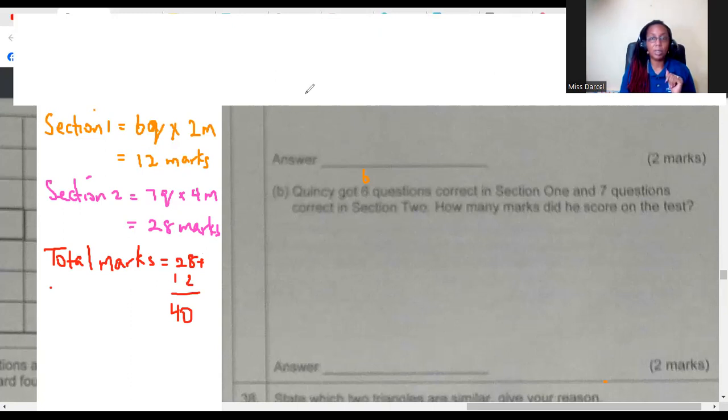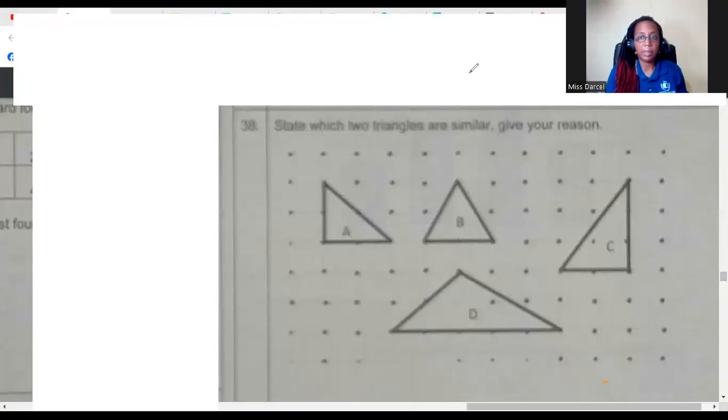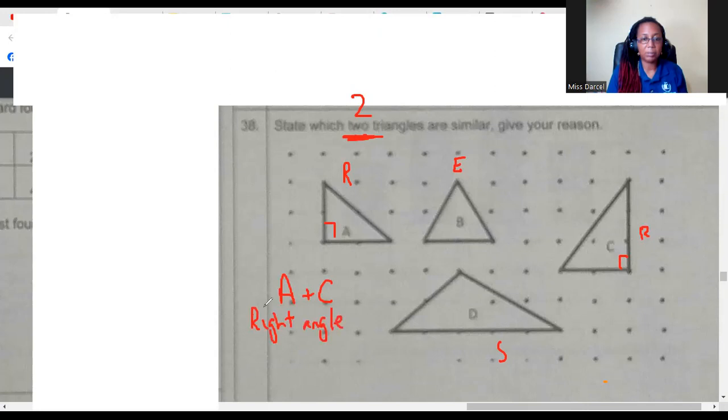Sometimes in your two part questions where there's part A and B, your first answer, your A answer, can affect your answer in B. So you have to make sure the top is correct before you get to the bottom, because if A is wrong, then B is going to be wrong. Good. Let's head to the next question. This one says state which two triangles are similar, give your reason. We're looking for two triangles. This is a right angle. This looks equilateral. This looks scalene. This is also right angle. So that means A and C are similar because they both have right angles. Easy. On to the next.